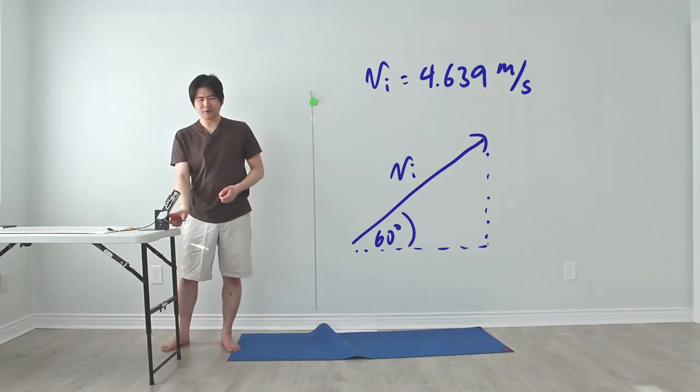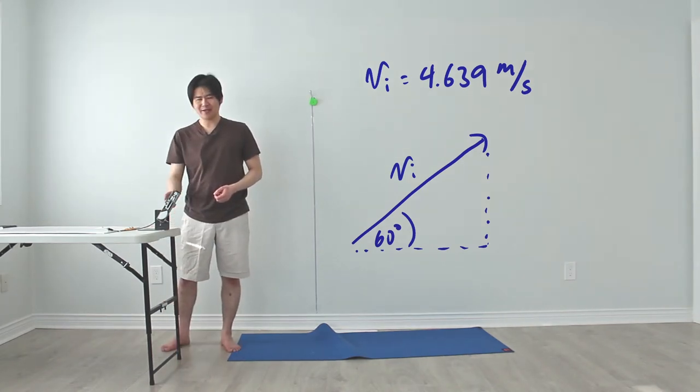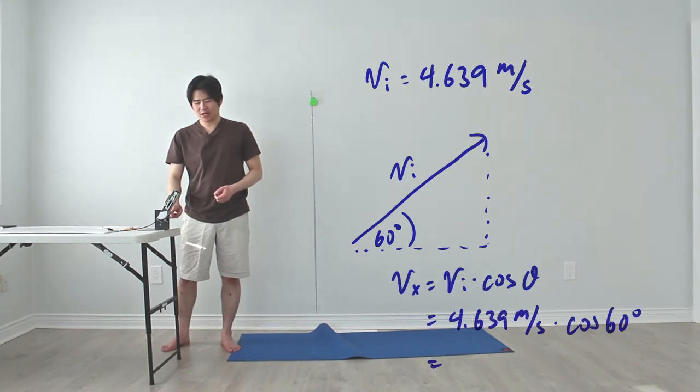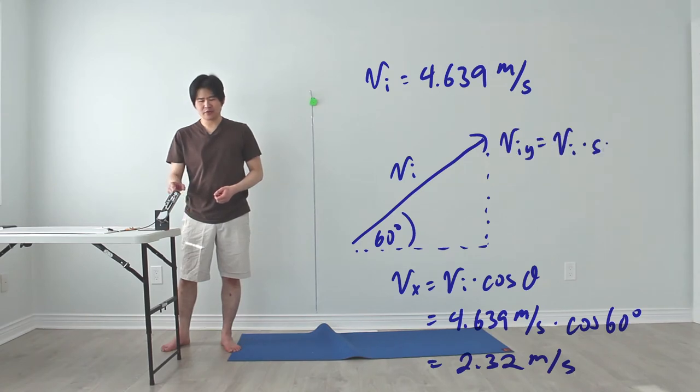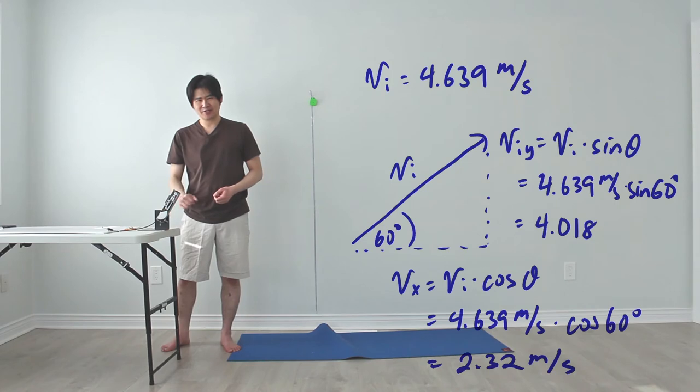To determine the horizontal velocity, we can multiply Vi times the cosine of 60 degrees. And if we want to figure out the vertical initial velocity of this projectile, we can multiply Vi by the sine of 60 degrees.